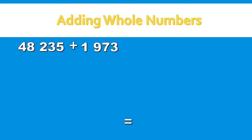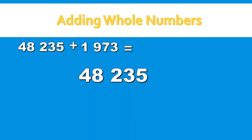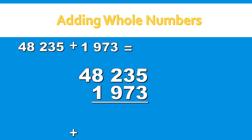Adding whole numbers. The number sentence on the screen is written horizontally. When we are solving, we will write it vertically. The larger addend goes at the top. Can you identify the larger addend? Yes, 48,235. The smaller addend goes at the bottom, 1,973. Let's solve.